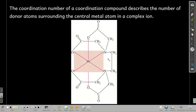When we talk about coordination numbers for a coordination compound, that's just telling us how many donor atoms are surrounding the central metal atom. Here we count six atoms donating electrons to the central metal atom, so the coordination number for this compound is six.